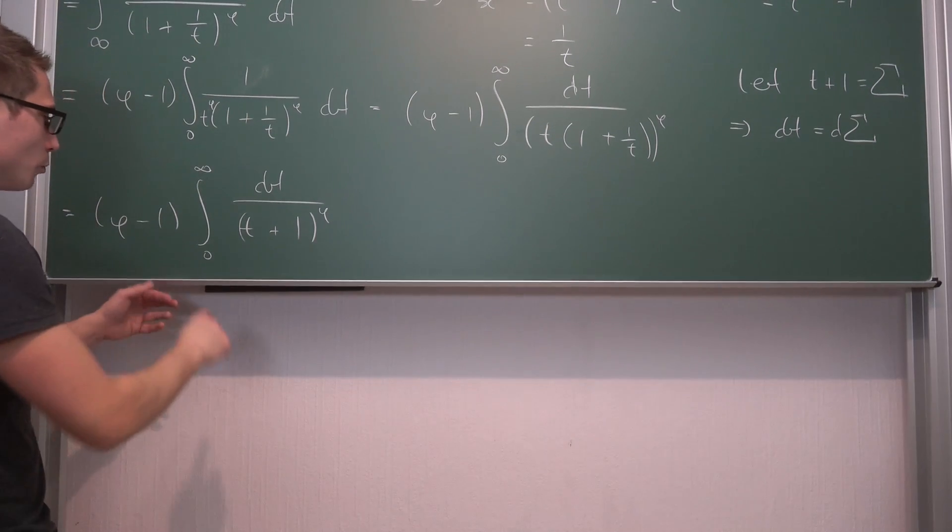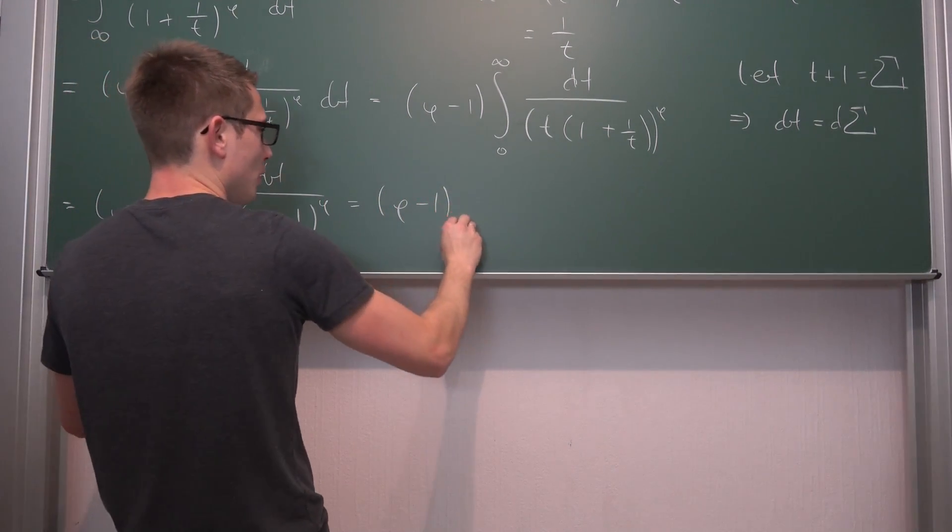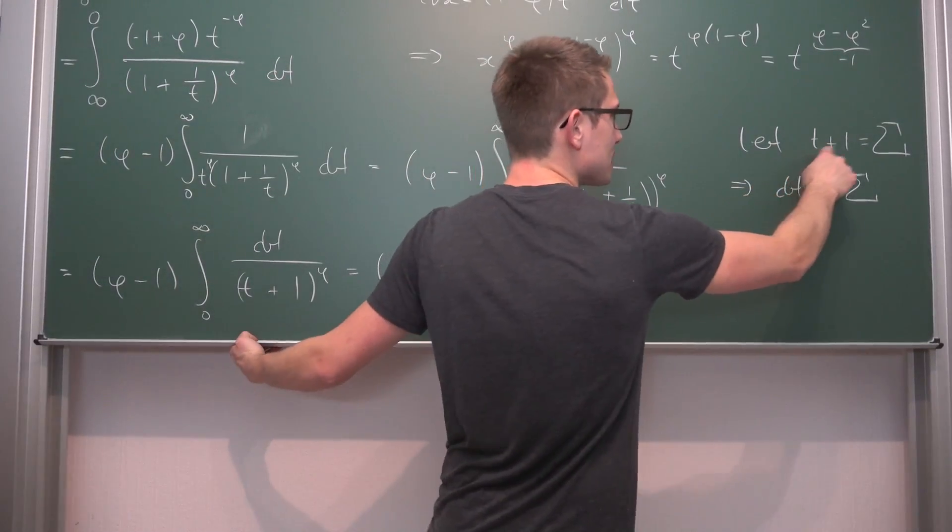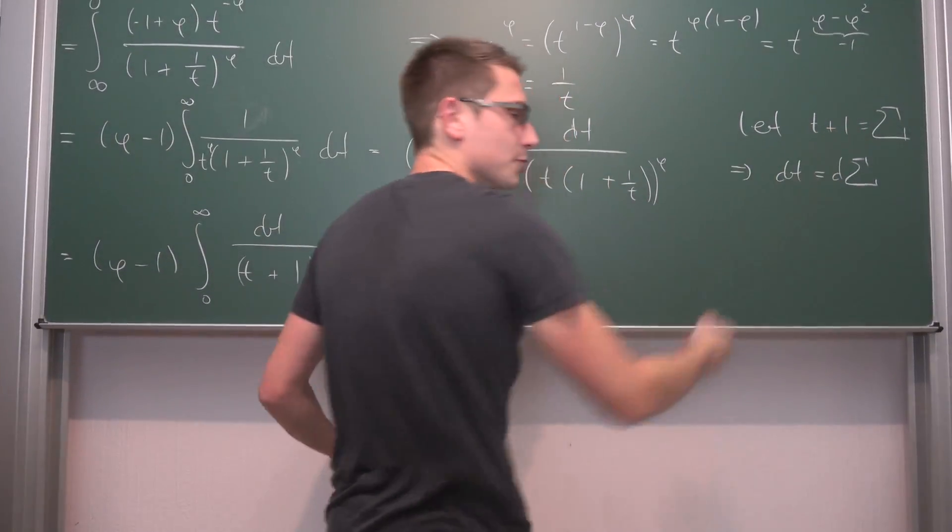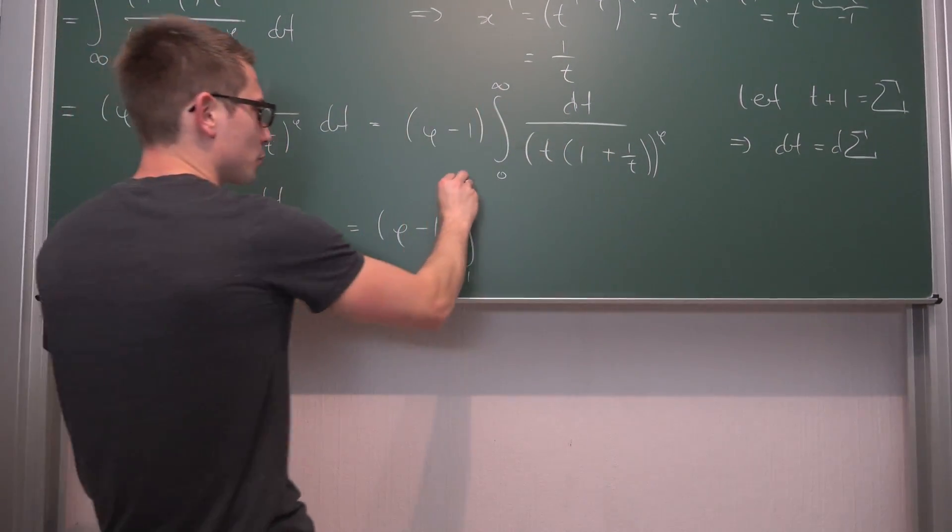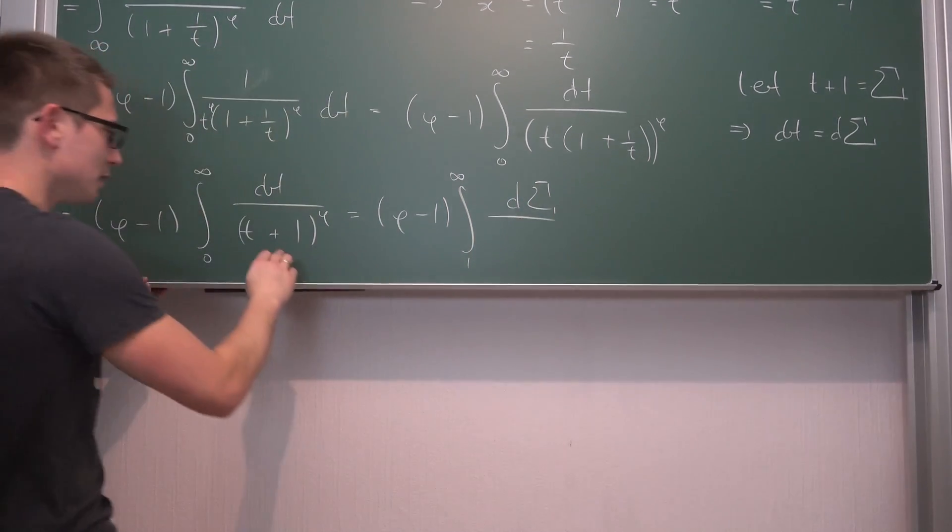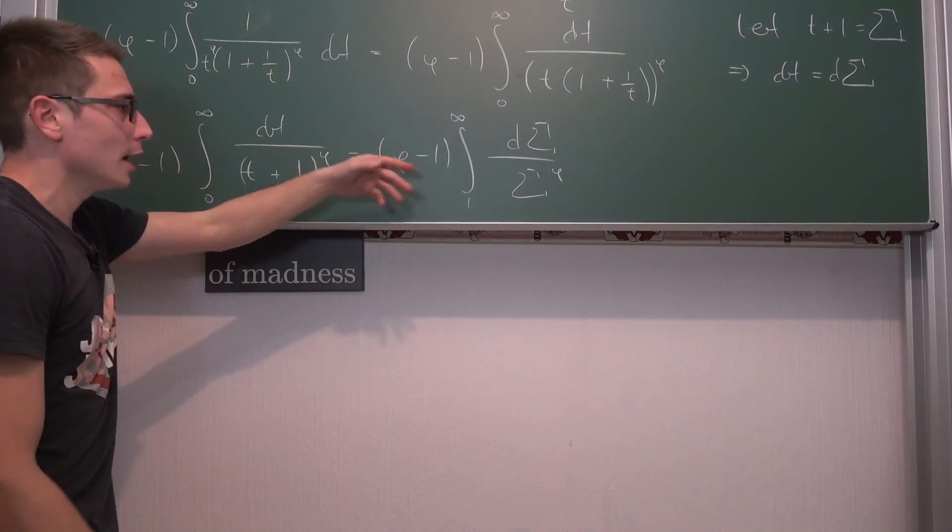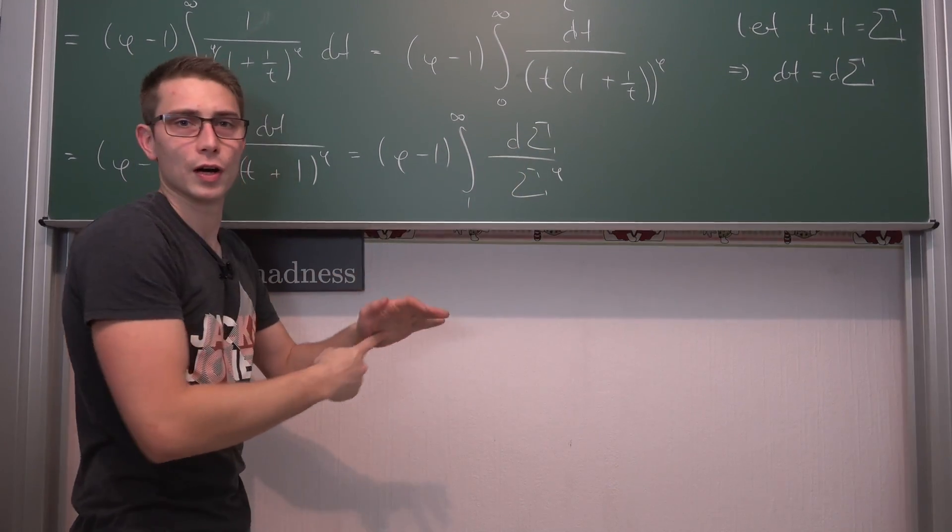Now what about the upper and lower bounds that we are going to get respectively? So this is phi minus 1 times the integral from, if we plug 0 into here, then sigma is equal to 1, and if we plug infinity into t, we get infinity up here. And this is going to be d sigma divided by sigma to the phi power.